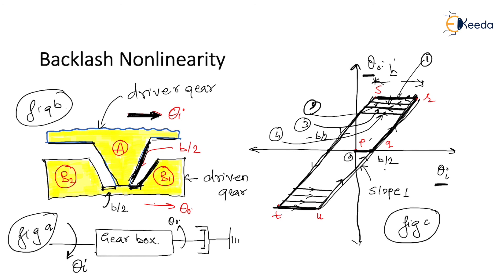The width of the input-output curve is equal to the backlash B, while the height corresponds to the limit of the output angle for a given input angle. So the width of the curve indicates the backlash, while the height corresponds to the limit of the input angle. This completes the concept of backlash non-linearity. Thank you for watching this video.